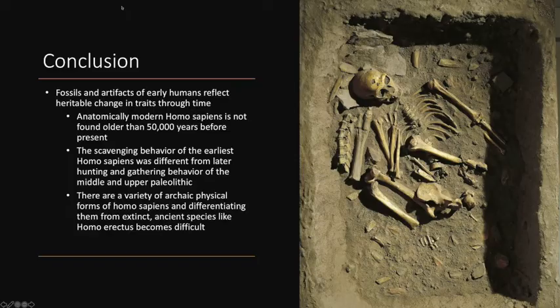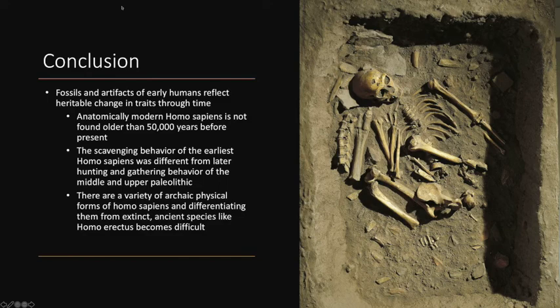In conclusion, fossils and artifacts of early humans clearly reflect heritable change in traits through time. Anatomically modern Homo sapiens like ourselves are not found much older than 50,000 years before present. Before 50,000 years before present, we use the term archaic Homo sapiens to designate them and to designate the difference of traits that they have. It's not only morphological or anatomical difference — we also see it in culture, in the learned behavior of the Homo sapiens of that time, probably best illustrated by the change from scavenging practices to hunting and gathering.